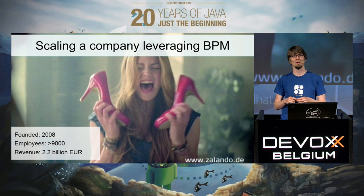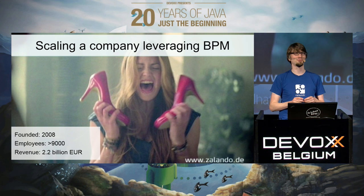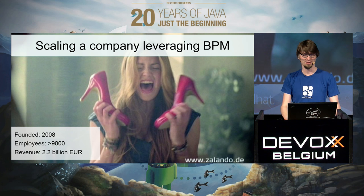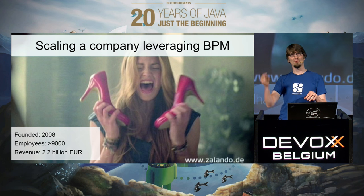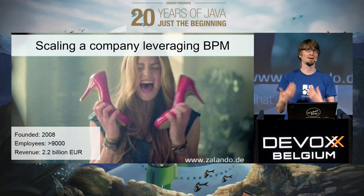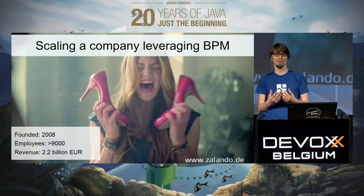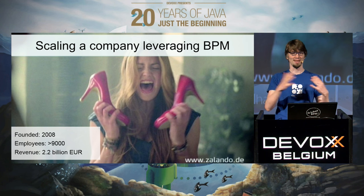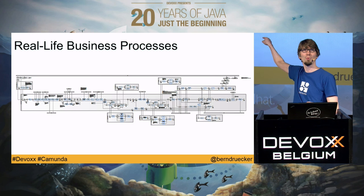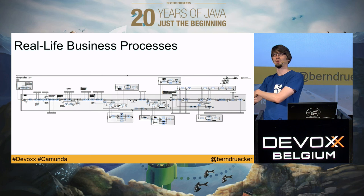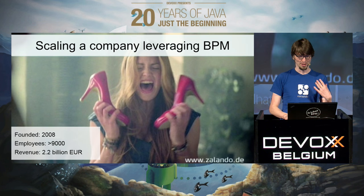A good example is Zalando, a reference customer. It's about clothing and shoes, expanding worldwide. Every order process you kick off as soon as you place an order is handled by a Camunda BPM process instance. That's important because they're growing very fast and adjusting processes very fast. It's important to have this picture of how the process looks in order to see where you want to change something, how to improve it to handle the growth.